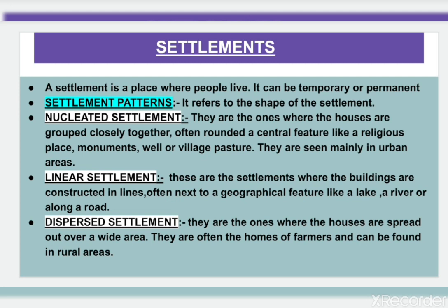Next is linear settlement. These are settlements where the buildings are constructed in lines, often next to a geographical feature like a lake or river, or along a road. Dispersed or scattered settlements are ones where the houses are spread out over a wide area.